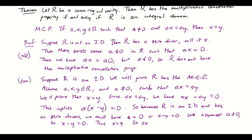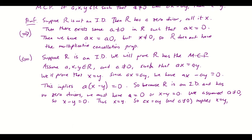So ax equaling ay with a non-zero implies x equals y. Therefore R has the multiplicative cancellation property. In other words, integral domains are exactly those commutative rings with unity which have the multiplicative cancellation property — which is pretty cool.